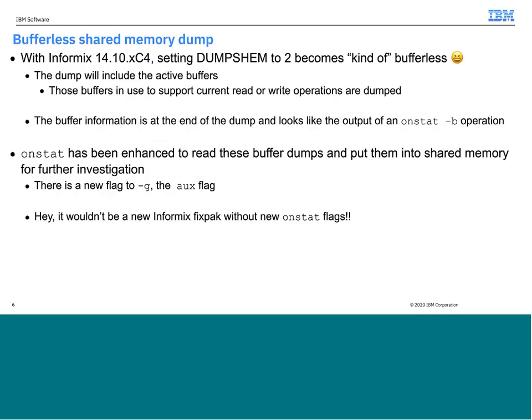So what did we do in XC4? Setting dump shared memory — or dump shim — to two becomes kind of bufferless. The dump will include the active buffers, those that actually have read and write session information, but it won't dump some of the buffers which aren't being used. The buffer information is at the end of the dump and it kind of looks like what you get when you run an onstat -b command.